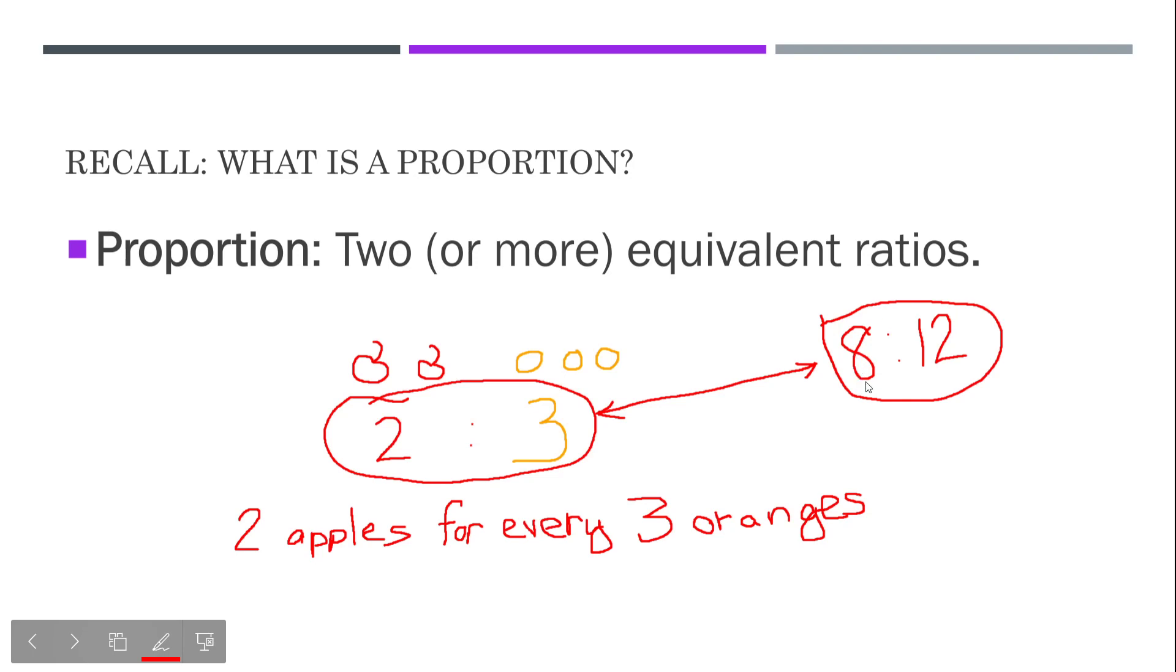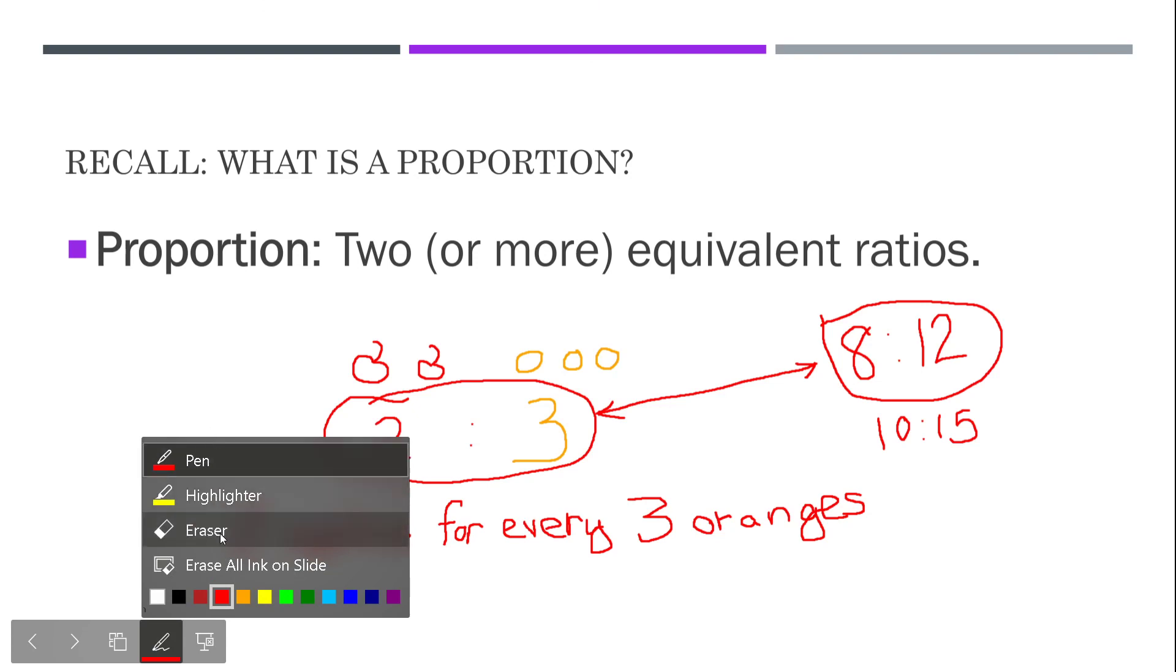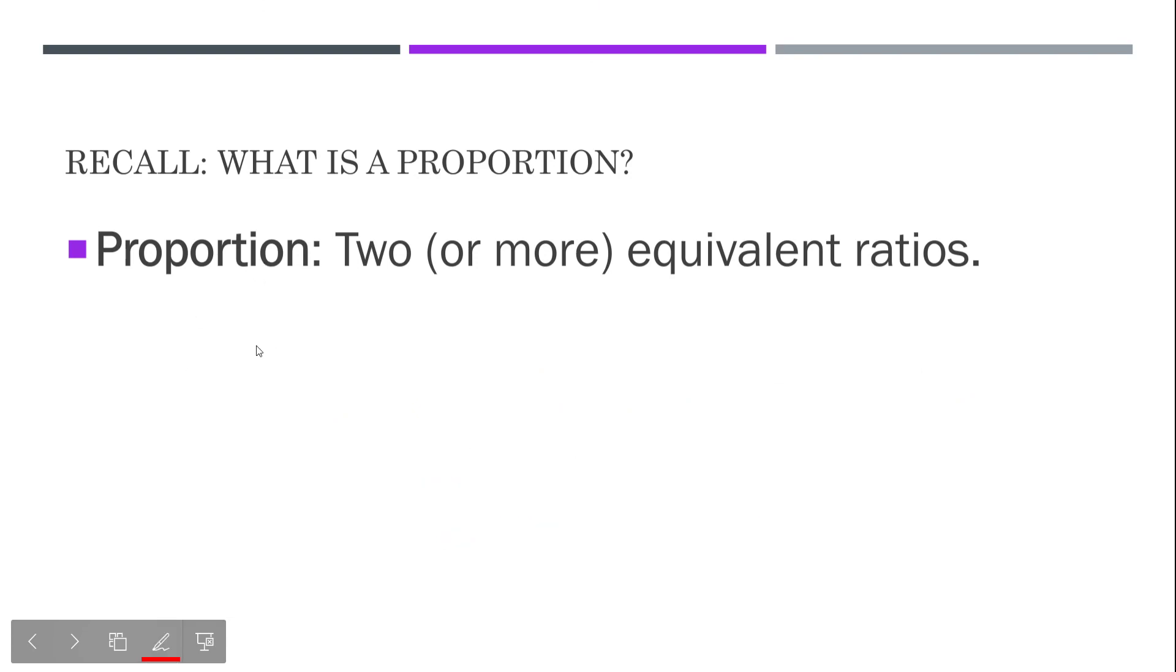Two to three is the same ratio of apples to oranges as the ratio eight apples to twelve oranges. If I added two more apples, I'd have ten apples, and I'd have to add three more oranges. So then I'd have fifteen. All of these ratios are the same. So if we're thinking about this as a proportion, well, two to three we know is equal to eight to twelve.